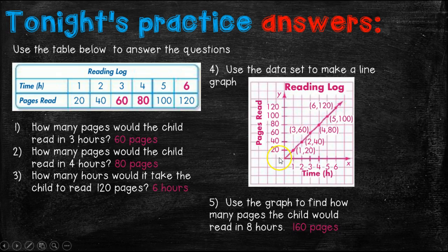Now, if you did it one through 120, would it still be correct? Yeah, it would be. Would it have taken a long time to do? Yes. But hopefully your graph looks something like this. You don't have to have the plots in here. You just have to have the dots and the lines and the pages read and the time and, of course, the title. And then if you were using this graph to find how many pages a child would read in eight hours, you would know that that would be 160 pages.